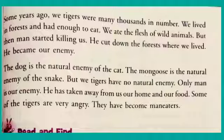The dog is the natural enemy of the cat, and the mongoose is the natural enemy of the snake. But tigers have no natural enemy — because the tiger is the strongest animal, the king. However, only man is our enemy, because man is cutting down the forest and killing tigers. He has taken away our home and food.